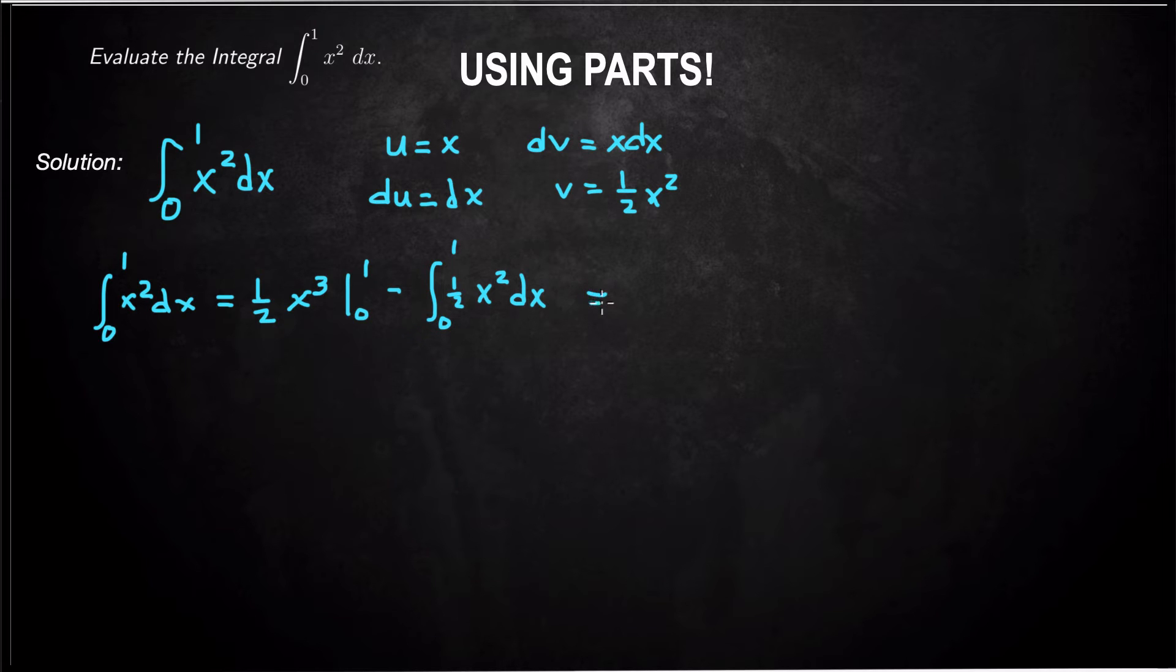So let me just simplify this a little bit. We'll get 1 half times 1 minus 0, or 1 cubed minus 0 cubed. So basically that's just 1 half minus 1 half integral from 0 to 1 of x squared dx.